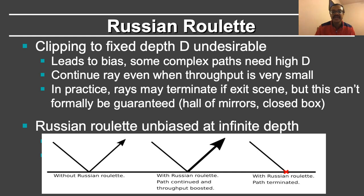Finally, it is unsatisfying to set depth d equal to some fixed value manually, and in fact it leads to bias in the Monte Carlo algorithm because you are excluding higher-depth or higher-bounce paths. Furthermore, you will continue the ray even when the throughput is small, and there is also the challenge of whether your program actually terminates. In practice, rays will terminate even for high d because they exit the scene, but in a hall of mirrors it can become challenging. Russian roulette is a technique which is unbiased and allows you to set d equal to infinity, enabling you to get rid of rays or paths that have low contributions.